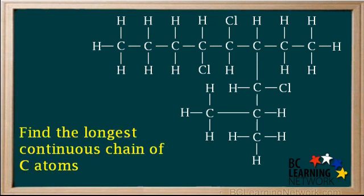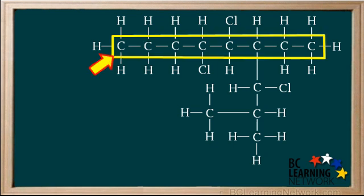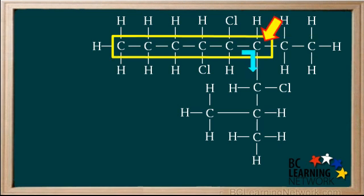We start by finding the longest continuous chain of carbon atoms. If we select this as the chain, you'll notice — if you count the carbon atoms — that it has eight carbon atoms in it. But going back to this point,